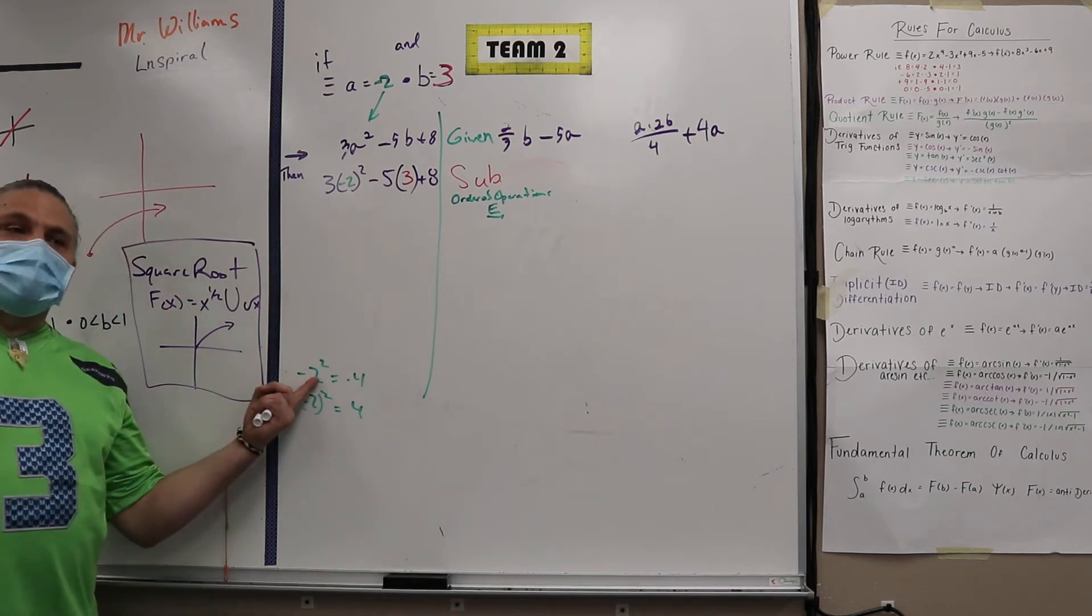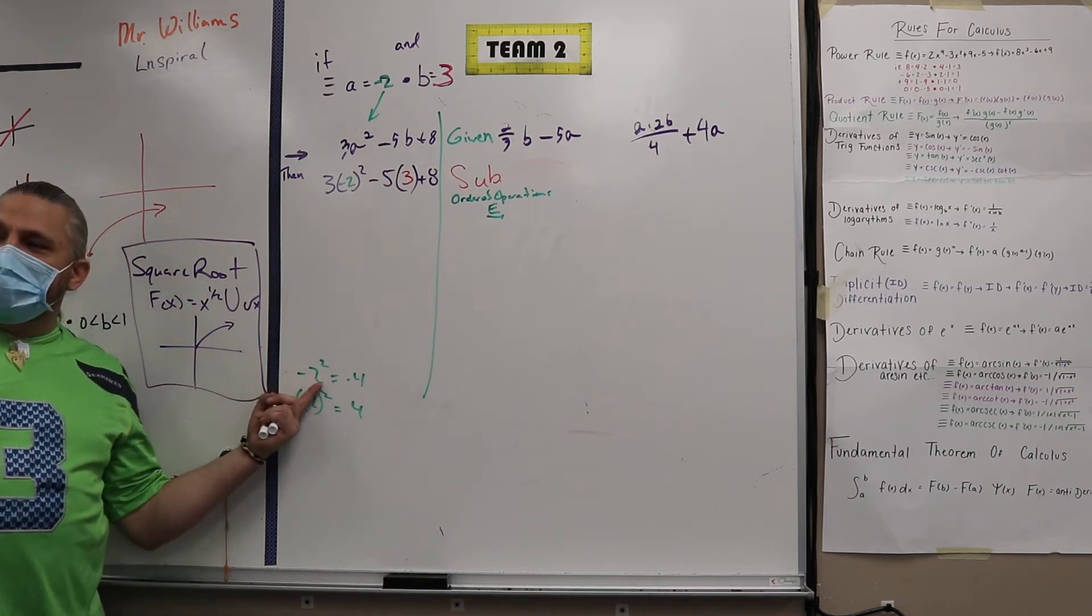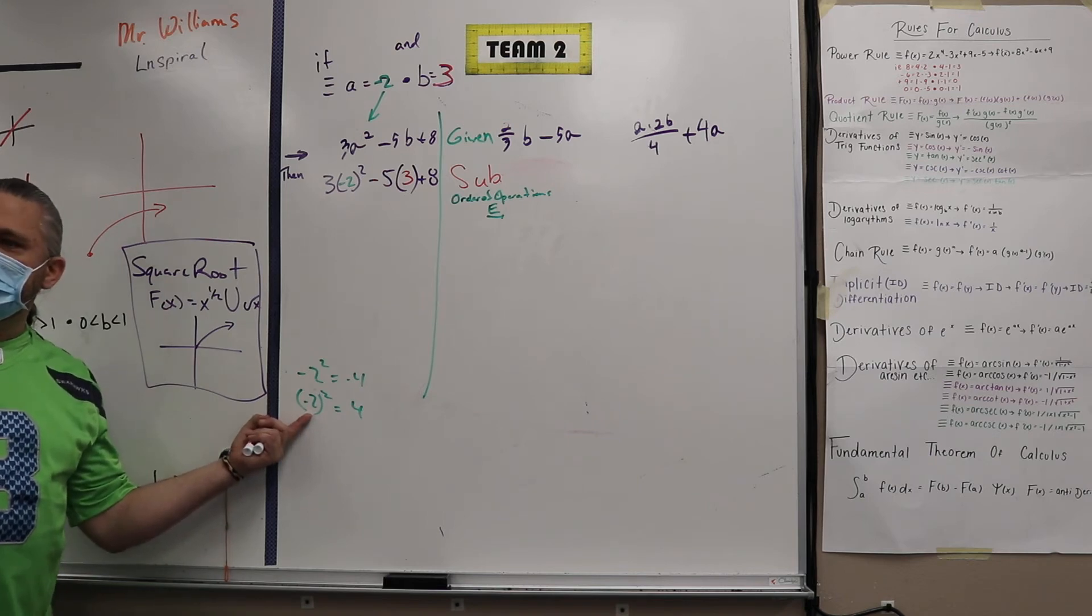Because two negatives make a positive. Here, the square does not affect the negative, but here it does.